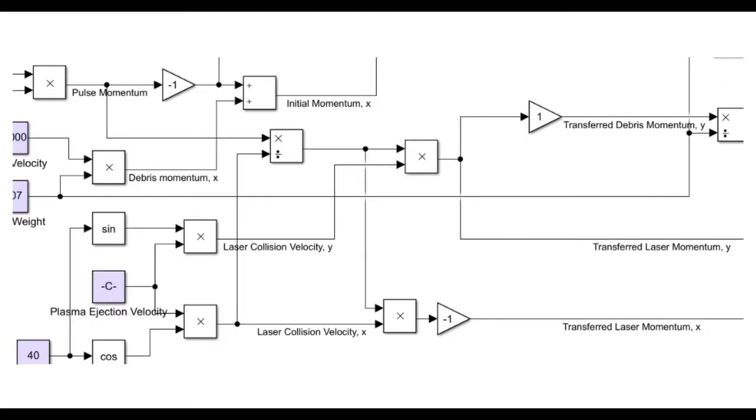The rest of the calculations are used to find numbers after the collision occurs. We can start with the change in the laser's velocity, which is found by multiplying the plasma ejection velocity by cosine 40 and sine 40. Translating these velocities into momentum is a little tricky. We know that momentum is always conserved, so by dividing the laser pulse momentum by the laser collision velocity in each direction, we find the constant that's needed to multiply by the velocity to get the laser momentum.